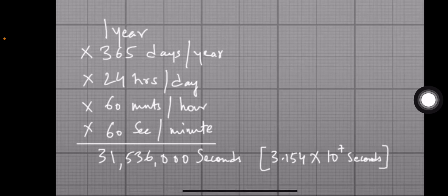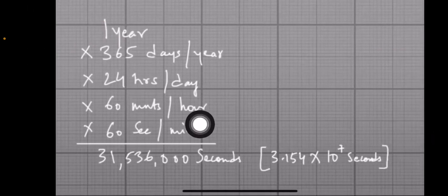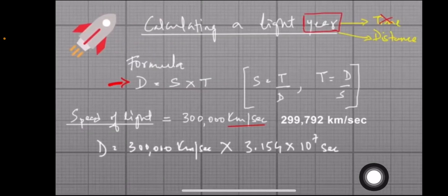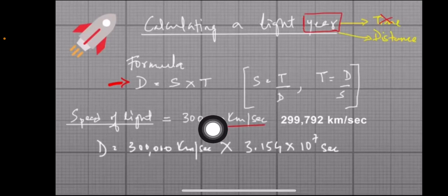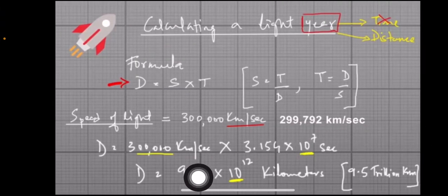So, in a year, light will cover a certain distance. We know the speed of light is 300,000 kilometers per second, and the time is 3.154 × 10^7 seconds. If you multiply speed by time, you get the distance — which is one light year.